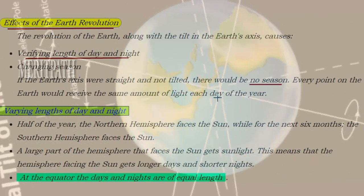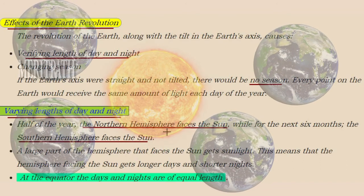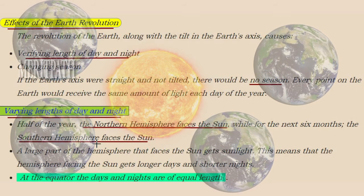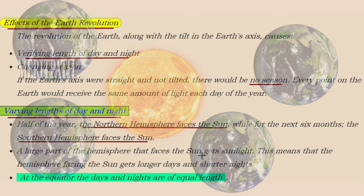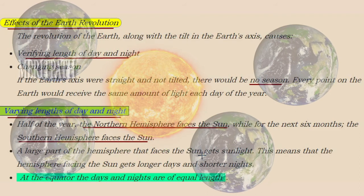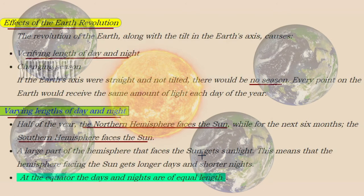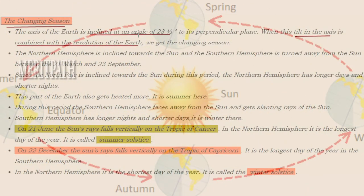The varying length of day and night occurs because, for half the year, the Northern Hemisphere faces the sun, and for the other six months the Southern Hemisphere faces the sun. The hemisphere facing the sun gets longer days and shorter nights, while the hemisphere away from the sun gets longer nights and shorter days. At the equator, day and night are always equal. The earth's axis is inclined at an angle of 23.5 degrees to the perpendicular plane.